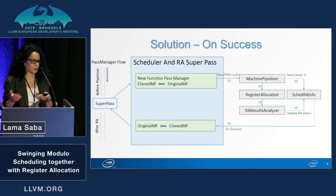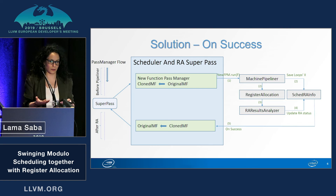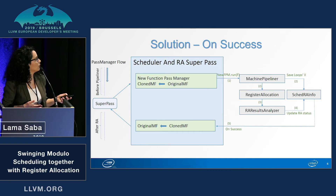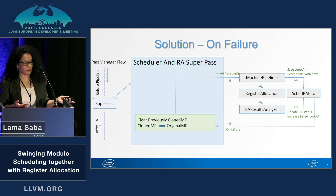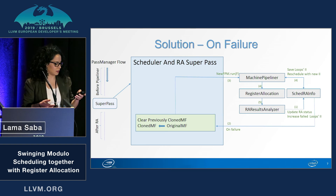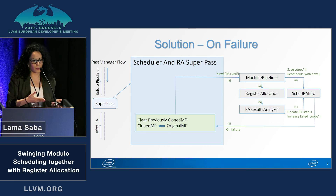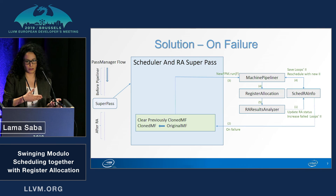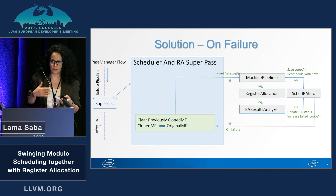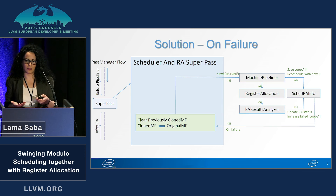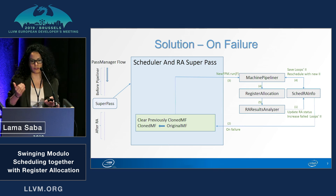Once the run is over and we're back in our super pass, we check if we were successful — if we don't have spills. If so, we clone the machine function after it's been pipelined and register allocated into the original machine function and continue. On failure, the RA result analyzer increases the failed loop's II. We then reclone the original machine function and rerun — this time the machine pipeliner will use the increased II from SCADRA info. We keep doing this until we're successful or until we reach a certain threshold.